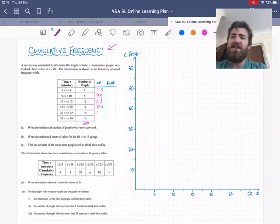And C, we can see, is finding an estimate for the mean. So yes, we do need all of the midpoints, and we will need that total frequency of 60 as well.